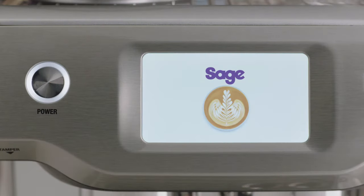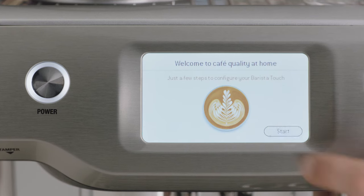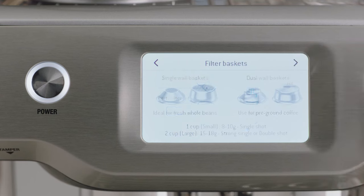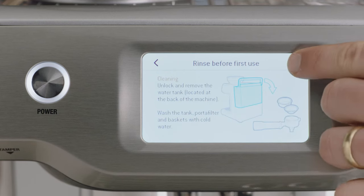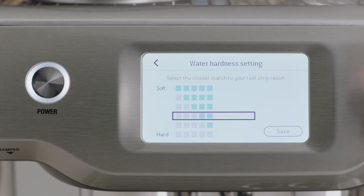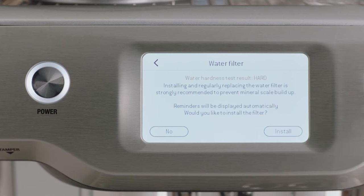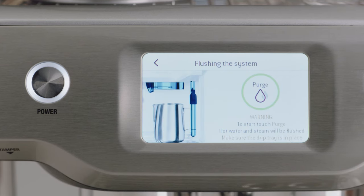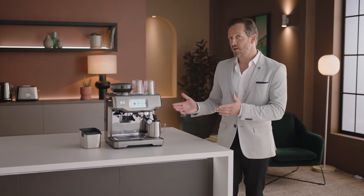Now let's power it up. Follow the step-by-step instructions on the screen to guide you through the first setup. It's pretty simple. When prompted, enter the result from the water hardness test strip so the machine automatically alerts you when to descale or change the filter. Now the machine is set up, you're ready to make your first coffee.